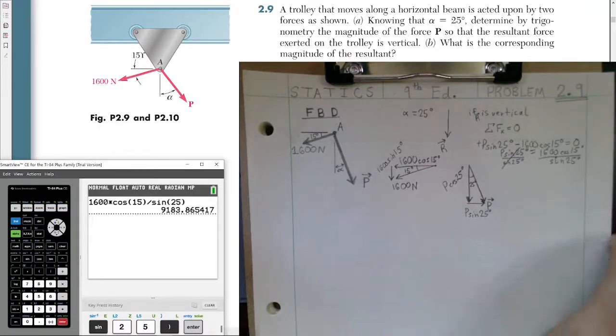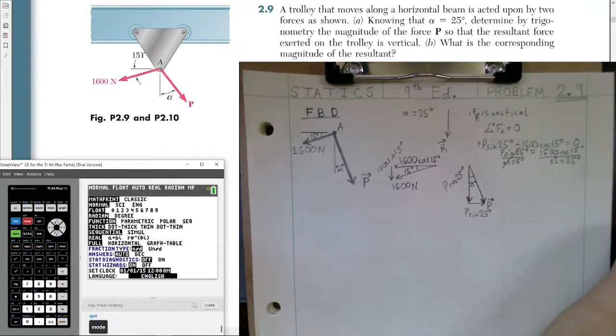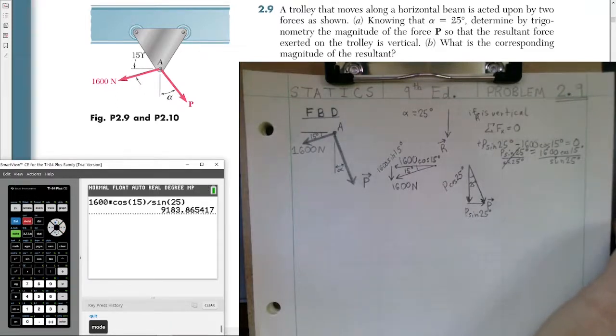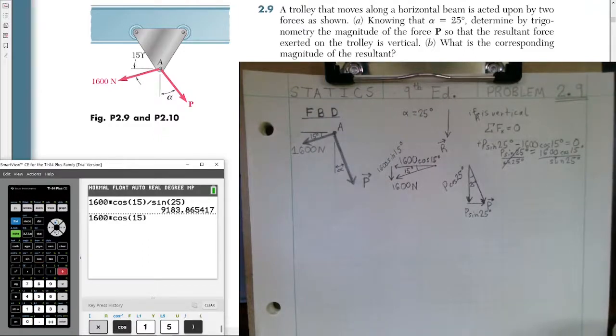Oh, you know what? I'm in radians, guys. I've got to check that. So I'm going to go to mode, go down to degrees. Alright. Always be careful to check your mode. Make sure you're in degrees when we're doing statics. Alright. So let's try that again. We're going to do 1600 times the cosine of 15 degrees divided by the sine of 25 degrees.